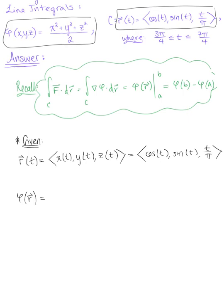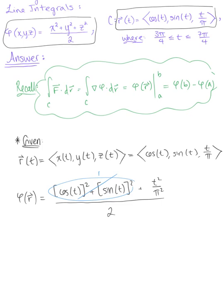So now let's go ahead and we'll parametrize our potential function. We have φ defined as x² plus y² plus z², all over 2. So in the numerator we have cosine of t squared plus y squared, which becomes sine of t squared. There's Pythagorean's identity. Plus we have z squared, which becomes t² over π², and that's all over 2. And so again, this is Pythagorean's identity, so that goes to 1.